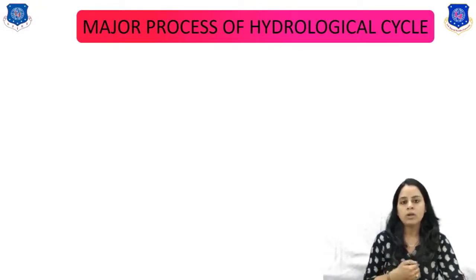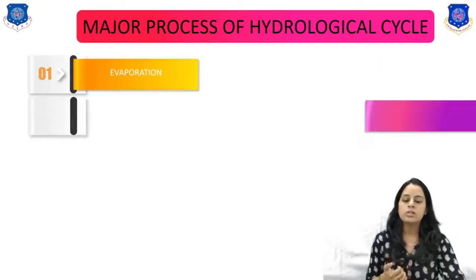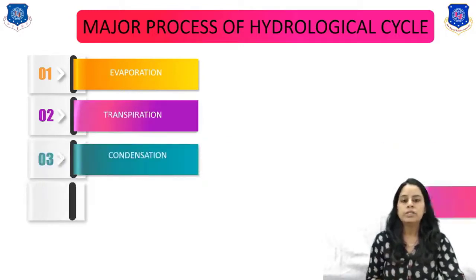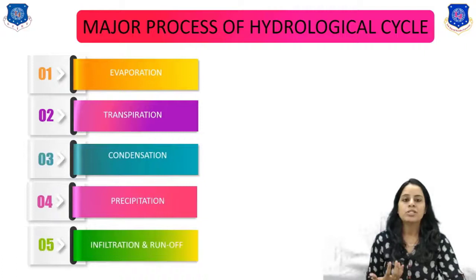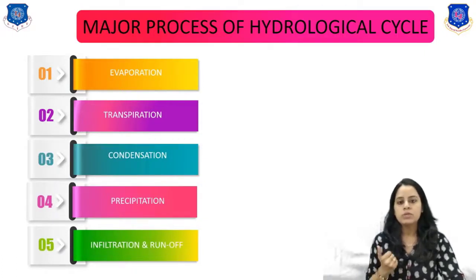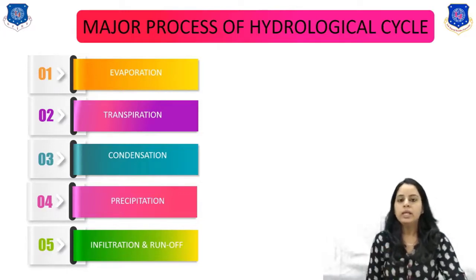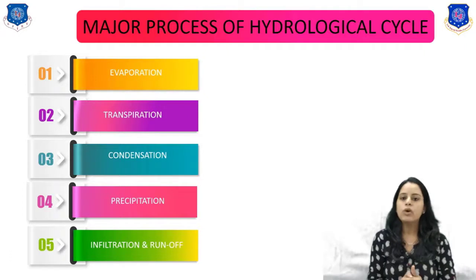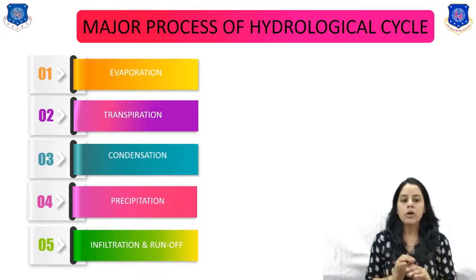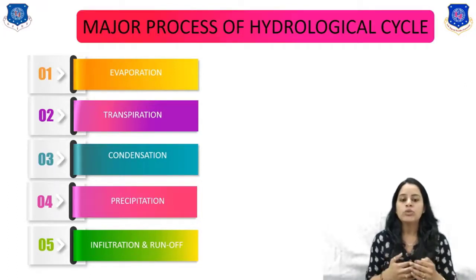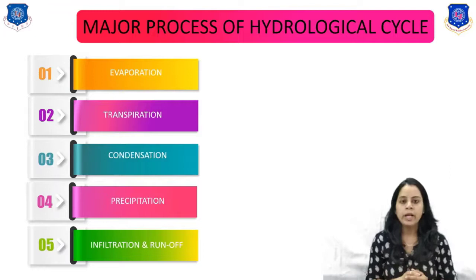The major processes in the hydrological cycle are: evaporation, transpiration, condensation, infiltration, and runoff. Evaporation occurs when water changes from a liquid state to a gaseous state. It occurs on water surfaces like lakes, rivers, and oceans. The evaporated moisture is lifted into the atmosphere, and some water vapor always remains in the atmosphere.